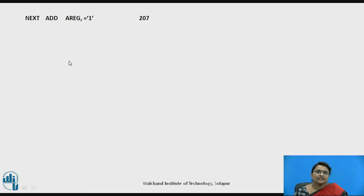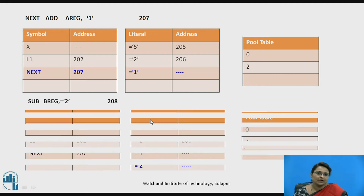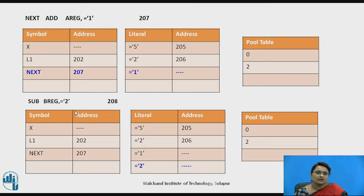The next statement again holds a label. The label NEXT is entered in the symbol table with the current location counter value 207. Another new literal is used here, so an entry is made for it in the literal table. The following statement similarly stores a new literal and the pool table is updated with a new pool table pointer entry.